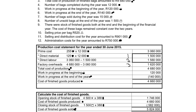Direct labor refers to the people who sit and make the articles. Indirect labor is, for instance, the manager or the cleaner of the factory — people who also work there but are not directly involved in the manufacturing process. Factory overheads are all the other expenses you have to manufacture goods: indirect material, indirect labor, electricity, rent for the building, insurance, depreciation, and all the other costs that you have.